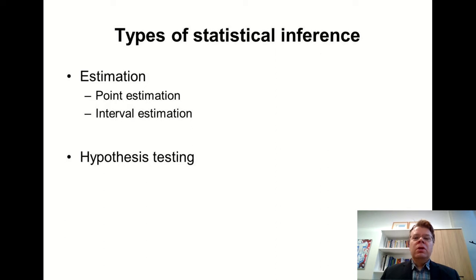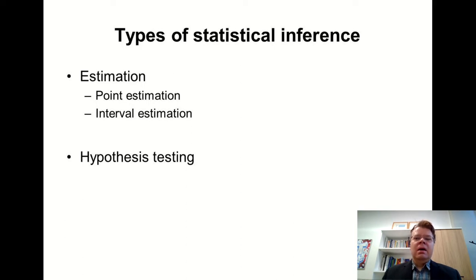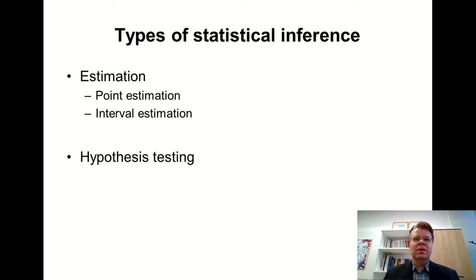There are two types of statistical inference that are useful to distinguish. One is the so-called estimation, and another is hypothesis testing. The difference is that in estimation, we are interested in estimating the underlying parameter of interest — for example, the slope coefficient beta_2 in the linear regression model.